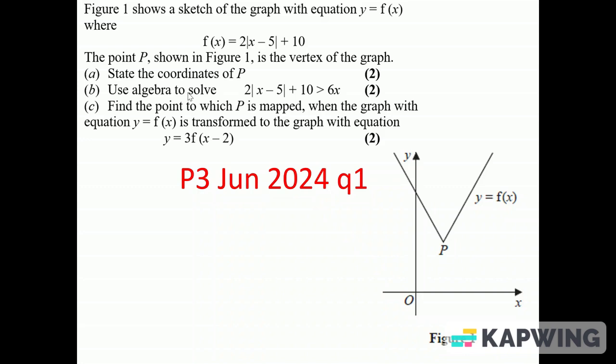First of all, we're going to find out where that vertex is. Remember that the modulus of absolutely anything is greater than or equal to zero. It can't be negative, it's got to be at least zero, so f(x) is bigger than or equal to 10.